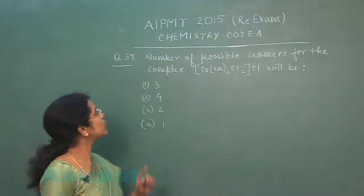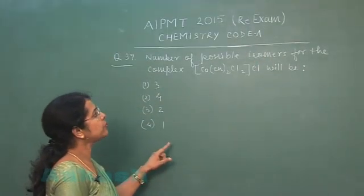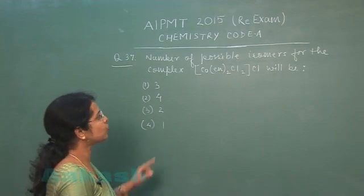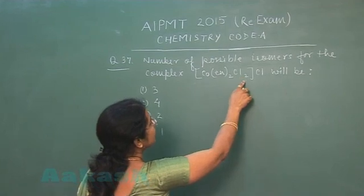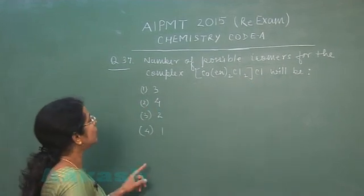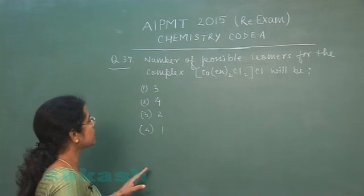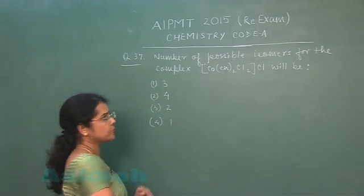Next question of paper, question number 37. Number of possible isomers for the complex [Co(en)₂Cl₂]Cl will be. First option 3, second option 4, third option 2, fourth option 1.